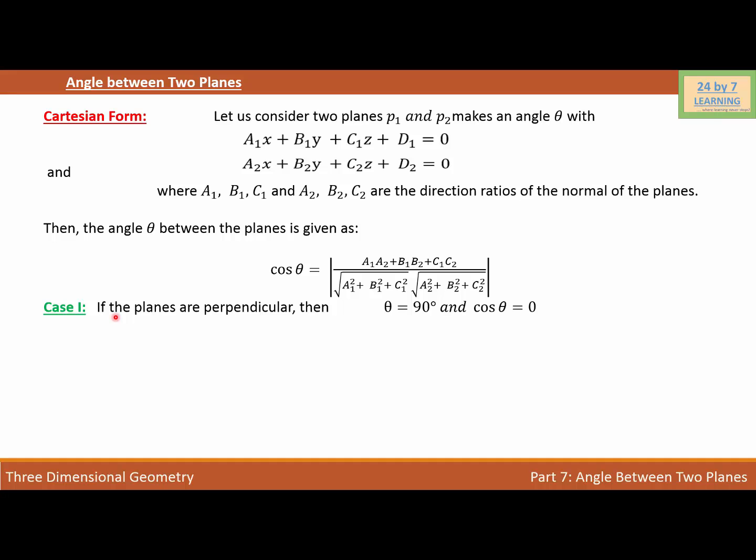Case 1. So, case 1 is if the planes are perpendicular, then angle will be 90 degrees and cosine 90 is 0 because we know that cosine 90 is 0. Then, A1A2 plus B1B2 plus C1C2 is equal to 0. In other words, if you substitute the value of direction ratios in this expression and that is equal to 0, it simply means that the angle is 90 degrees and the planes are perpendicular.